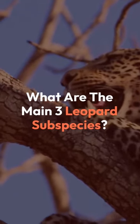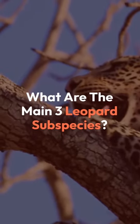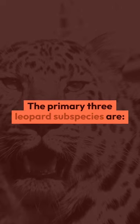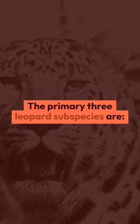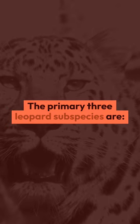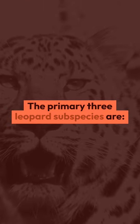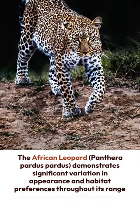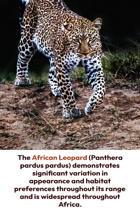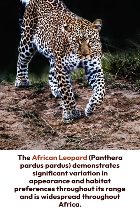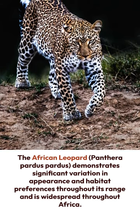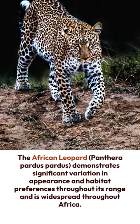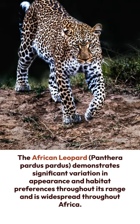What are the main three leopard subspecies? The primary three leopard subspecies are the African leopard, Panthera pardus pardus, which demonstrates significant variation in appearance and habitat preferences throughout its range and is widespread throughout Africa.